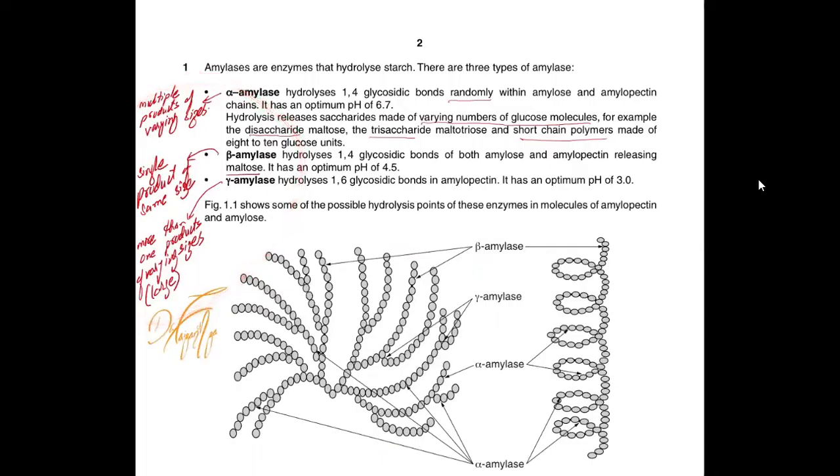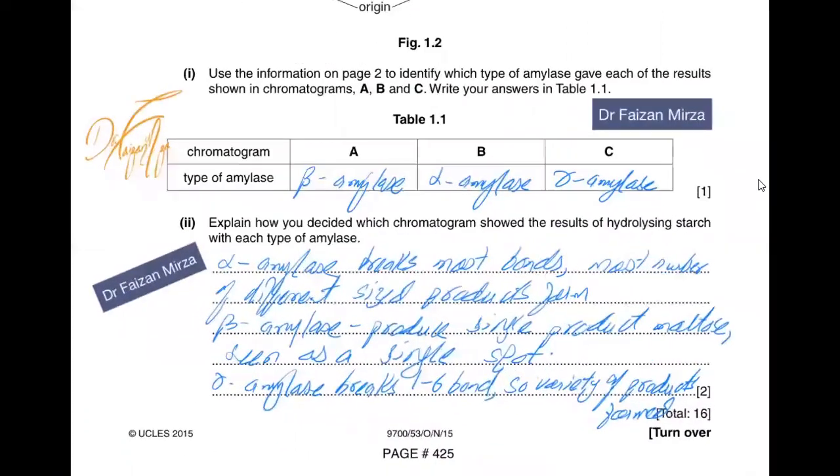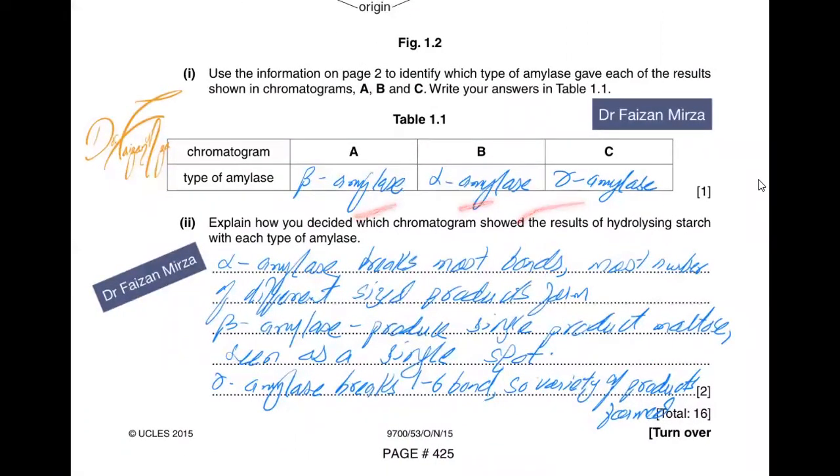Alpha amylase gave you most products of varying sizes. Beta gave you a single product of the same size. Gamma gave you more than one product of varying sizes large. So if you try to just figure this out, this is what your table should look like. That beta, alpha, and gamma amylase actually are A, B, and C in the very order.